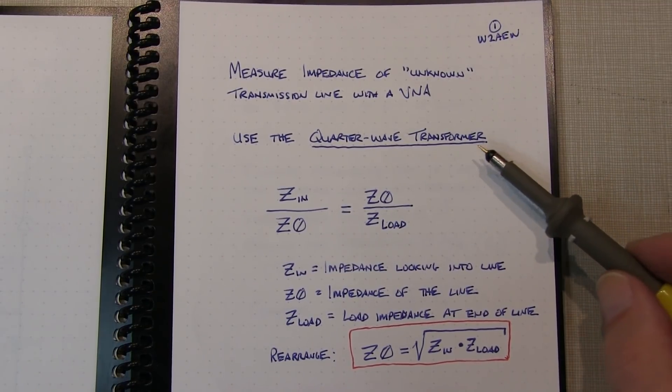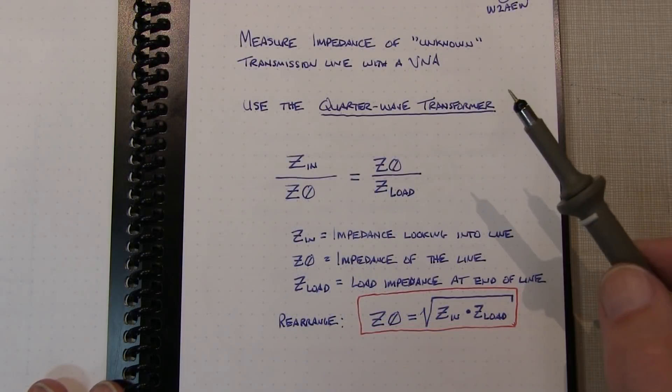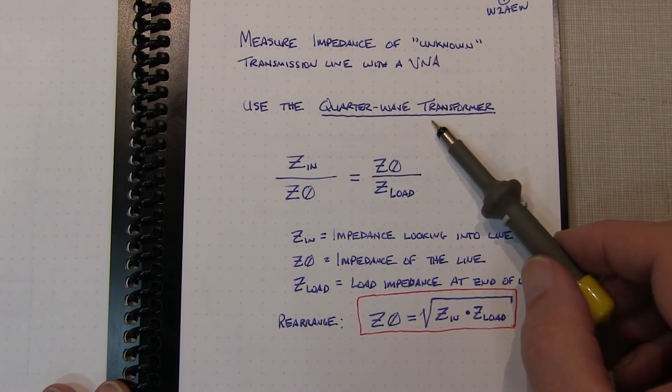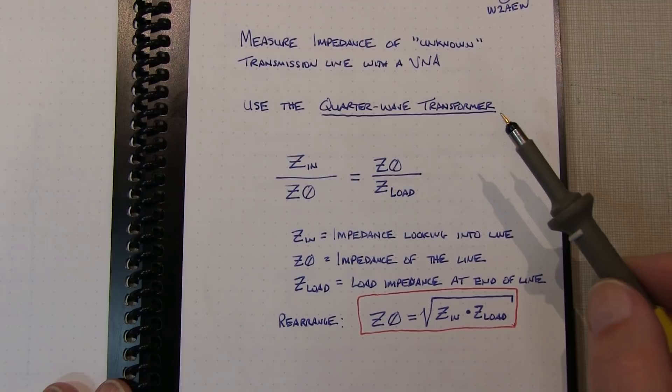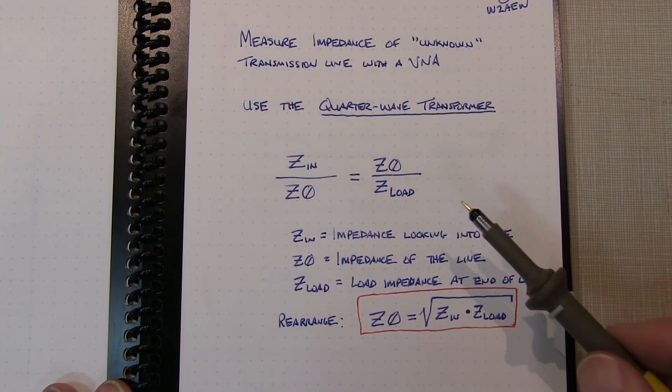We're going to use the principle of a quarter-wavelength transformer. The principle is when the transmission line is a quarter-wavelength long, you get an inversion of the impedance.